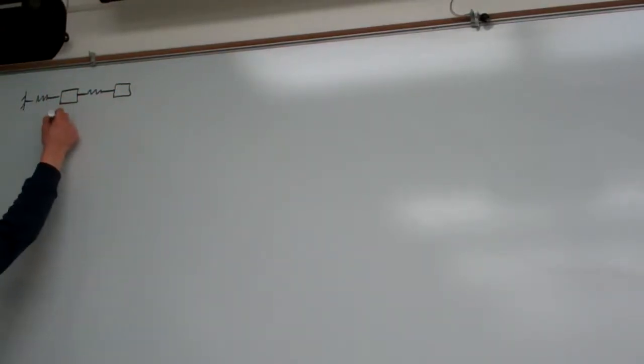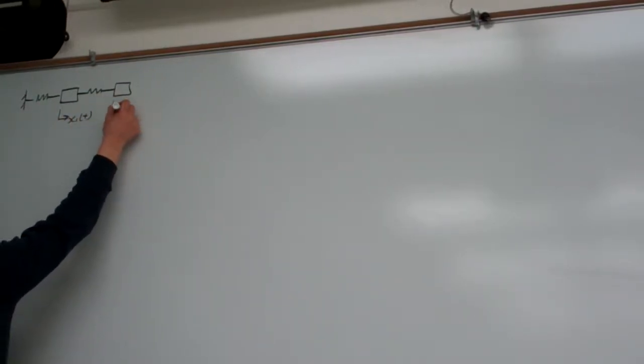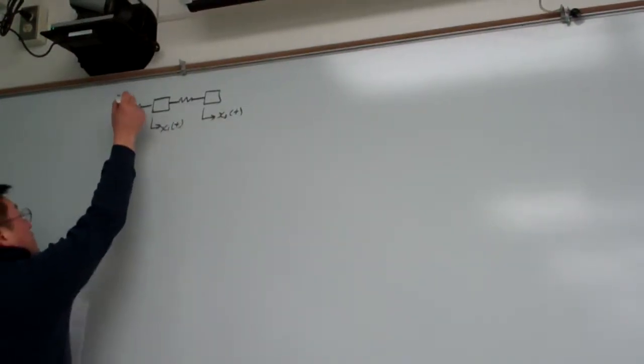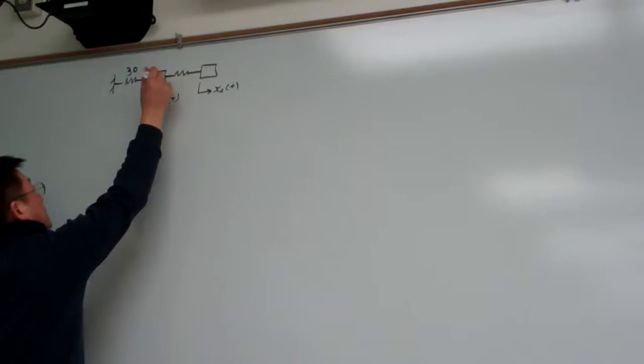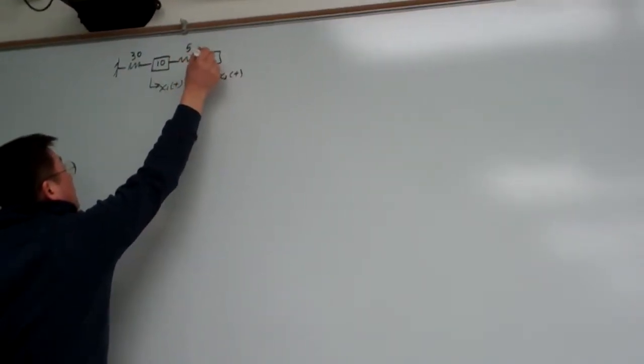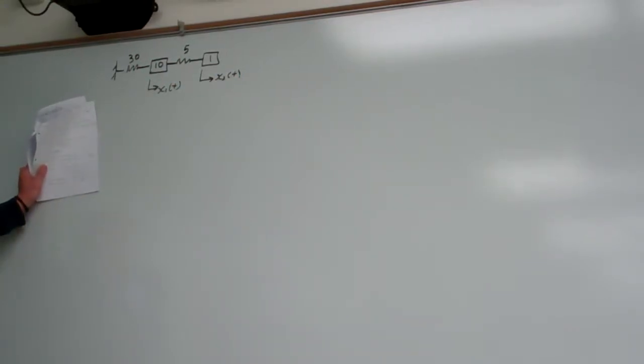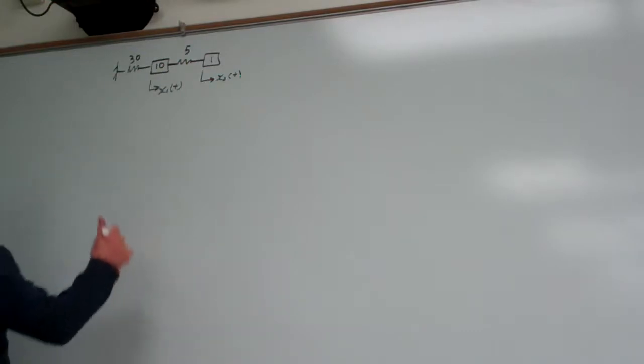So if we use the two degree of freedom system, and this one we've seen before, and the spring constant, this is 30, and the mass is 10, and this is 5, and the mass is 1. And we use this example in the last lecture hours to demonstrate how to determine the natural frequencies and to demonstrate how to calculate the modal vectors and even using this one to exercise how to normalize the modal vectors with respect to M.